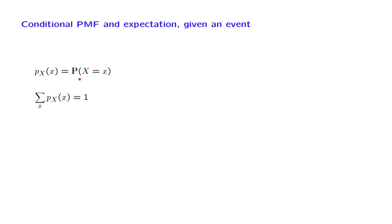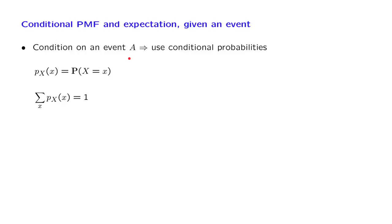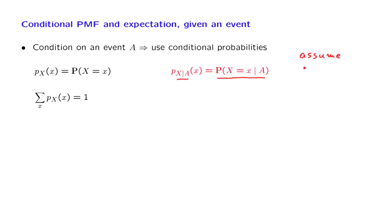Consider a random variable x with some given PMF, whose values sum to 1, as must be true for any valid PMF. We are then told that a certain event A has occurred. In that case, the event that x equals little x will now have a conditional probability of this form. We will use this notation to denote the conditional probability that the random variable takes the value little x, where the subscript indicates we are talking about random variable x in a model where event A is known to have occurred. For this conditional probability to be well defined, we assume that the probability of A is positive.